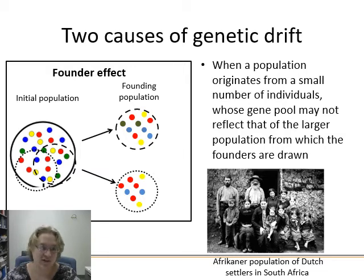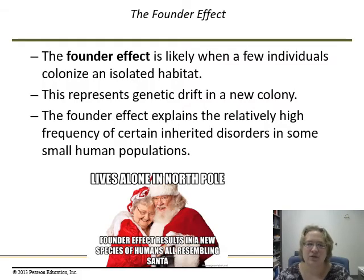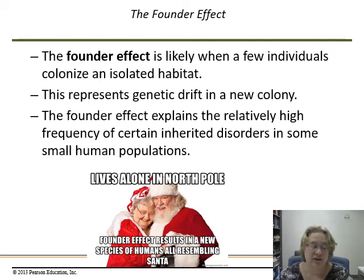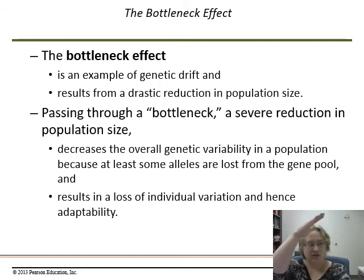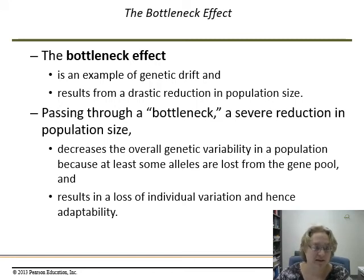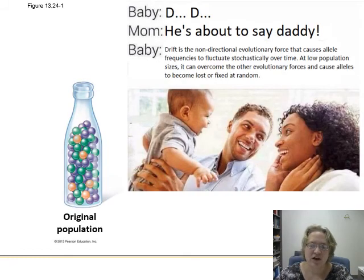Examples of founder effect include the Afrikaner population in South Africa and the Amish and Mennonites in the U.S. — founder effect explains a relatively high frequency of certain inherited disorders in these small, isolated human populations. The bottleneck effect is the other type — a drastic reduction in population size, where genetic diversity gets severely reduced during that period, like in the effective population calculation with fluctuating sizes. This decreases overall genetic variability and therefore adaptability, since there's less variation for natural selection to work on.